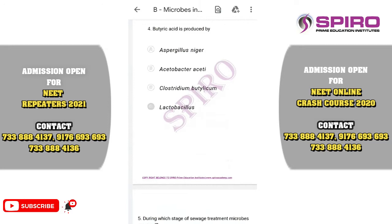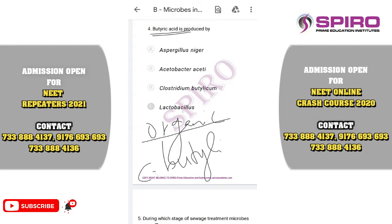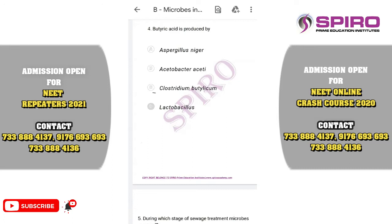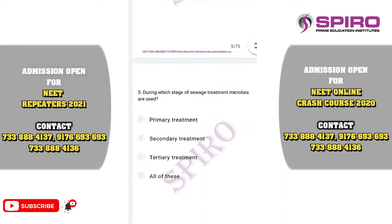Question number four. Butyric acid is produced by microorganisms that play a very important role in the production of a variety of organic acids like citric acid or acetic acid. Butyric acid is produced by the bacteria Clostridium butylicum. These are all memory-based questions directly in NEET. The correct option is option C.